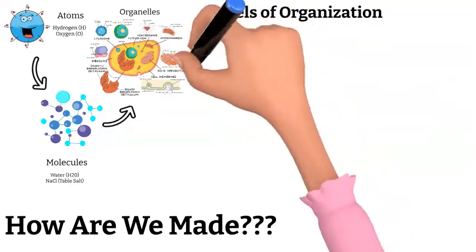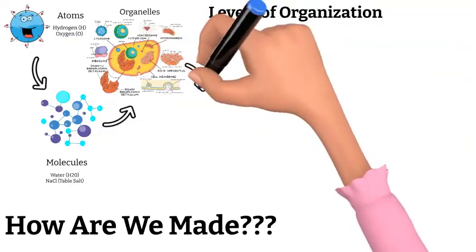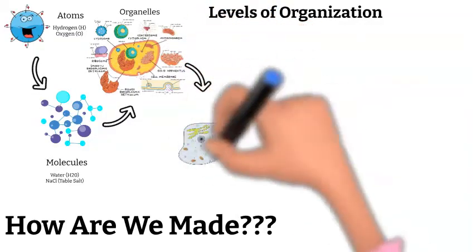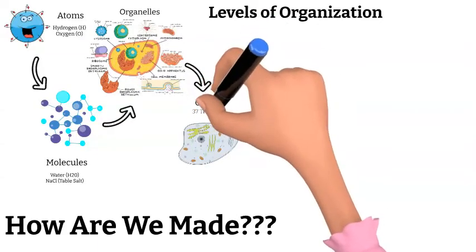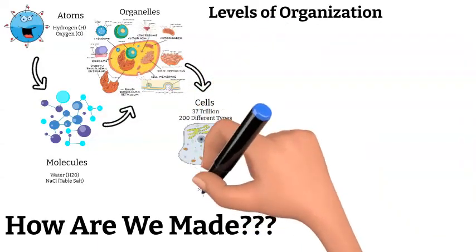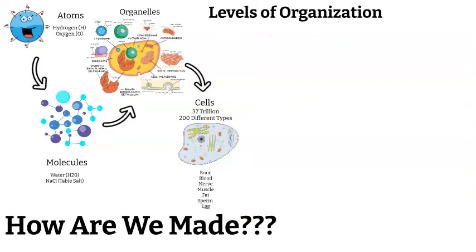A bundle of organelles all working together inside of a membrane is called a cell. Our bodies are made up of over 37 trillion cells, and we have over 200 different types living in our bodies at any given time. Some examples of types of cells are bone, blood, nerve, muscle, fat, sperm, and egg.